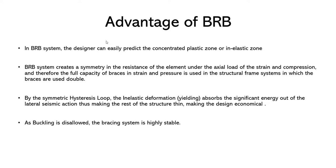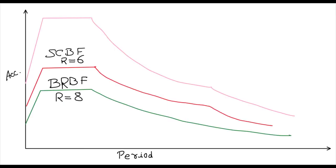In RAM Structural System, the buckling restrained bracing system has been implemented with a standard library that can be directly applied to cross bracings for analysis. Importantly, due to the high ductility performance of the BRBF, the ASCE code suggests a response modification factor R up to 8, meaning the structure is designed for a very small fraction of the base shear — higher R value means lower base shear, which economizes the building design.